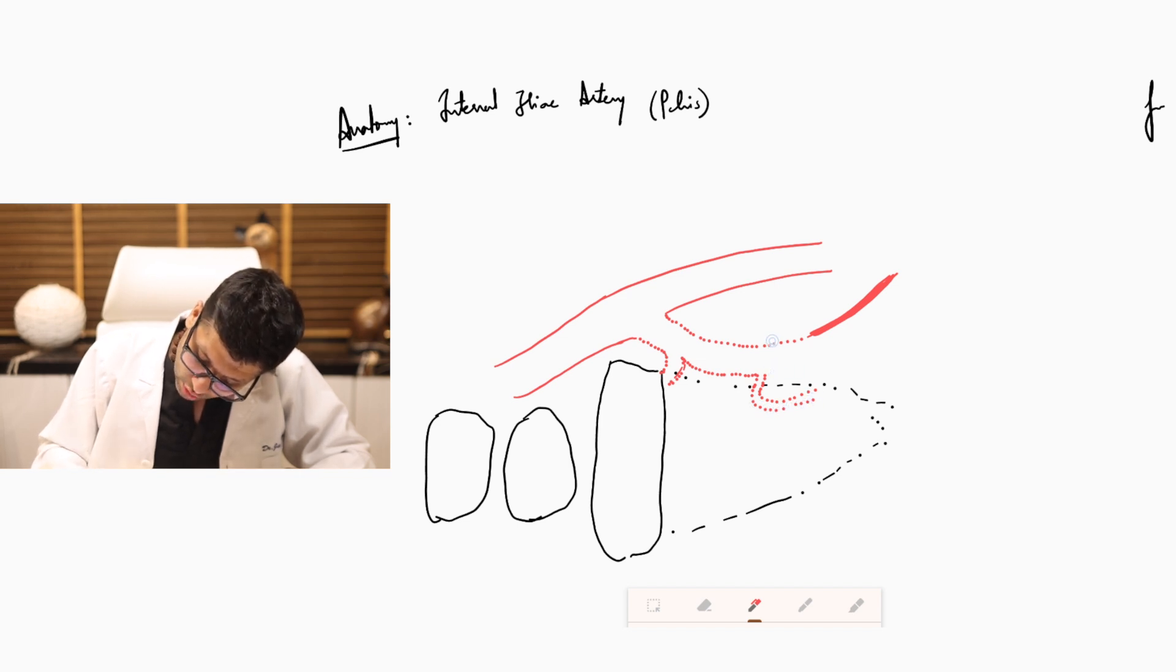Slightly above that on the medial side, it will give a branch which is the obturator, which exits through the obturator foramen, which is important for us to understand as a vessel.